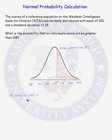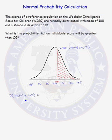Writing our probability as a probability statement, we have the probability that the WISC score is greater than 105. Remember, it does not matter whether we calculate the probability that the score is greater than 105 or greater than or equal to 105. The two probabilities will be identical when you are talking about a continuous random variable, because the probability that an individual score equals exactly 105 is zero.